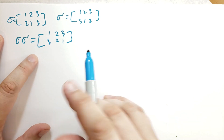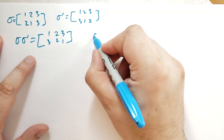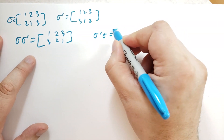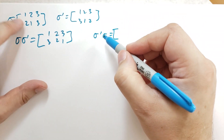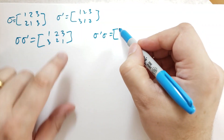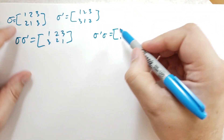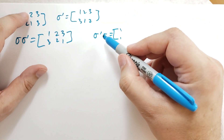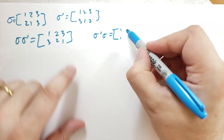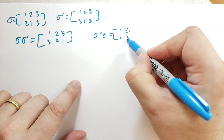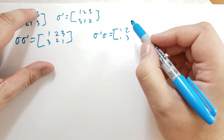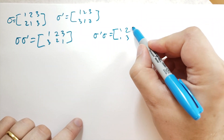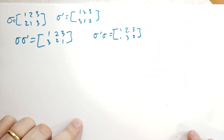We can also compute sigma-prime sigma: applying sigma first, 1 goes to 2, 2 goes to 1, so 1 goes to 1. Then 2 goes to 1, 1 goes to 3, so 2 goes to 3. And 3 goes to 3, 3 goes to 2, so 3 ends up going to 2.